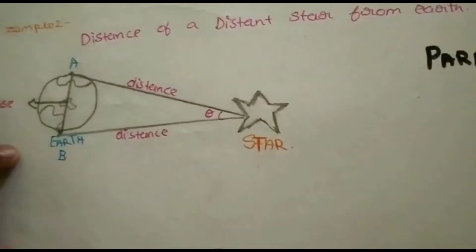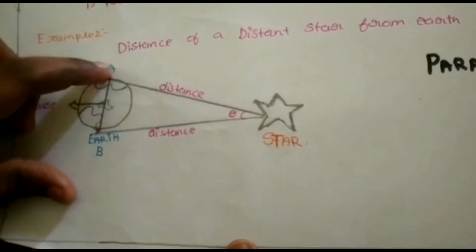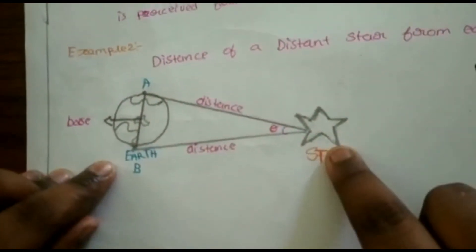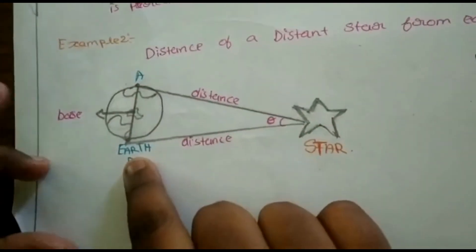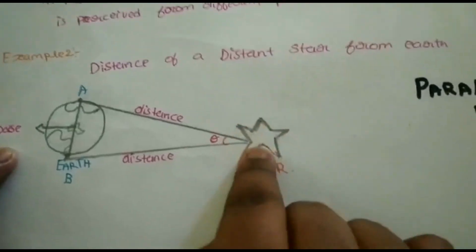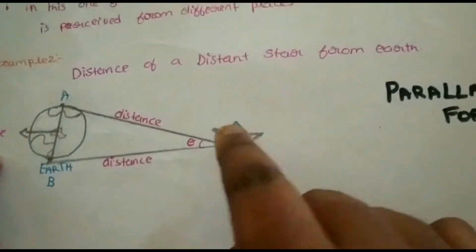Coming to example two: a person in the north sees the star and a person in the south sees the star. A and B is called the base, and we measure the distance between the Earth and the star, along with the angle.